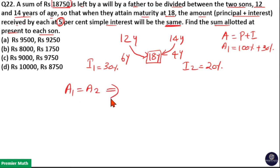So amount 1 is equal to amount 2. That means here, interest is 30 percentage, principal is 100 percentage. So, 130 percentage of principal 1 is equal to principal is 100 percentage and interest is 20 percentage. So, 120 percentage of the principal 2.